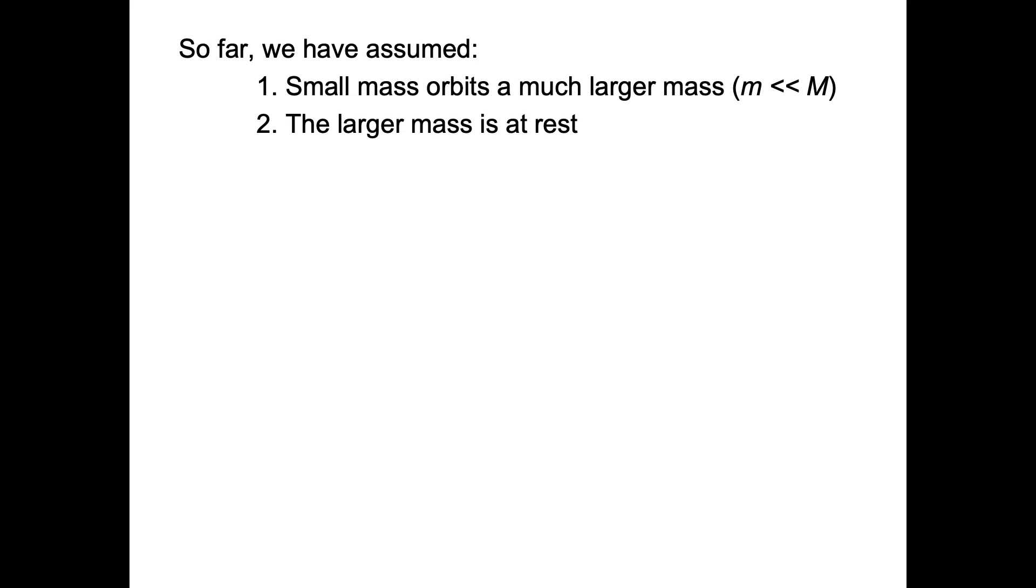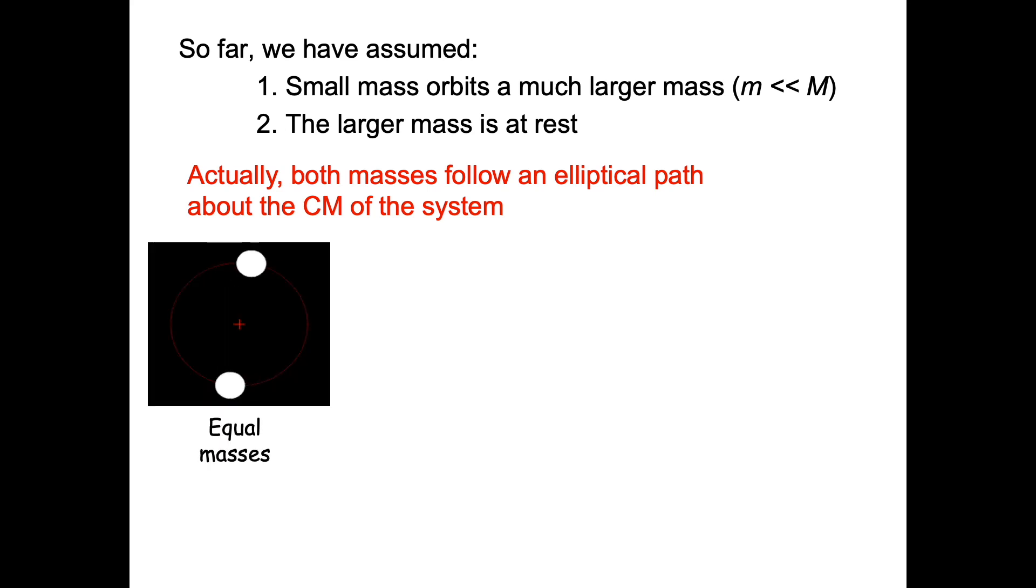So far, we've assumed small mass objects in orbit around much larger mass objects, where lowercase m is much smaller than capital M. In that case, we can approximate the larger mass as being at rest. We're treating the sun as stationary and the planets are orbiting around it. In truth, all of the planets and the sun are orbiting around a shared center of mass. All of the objects are following elliptical paths around the center of mass of the system.